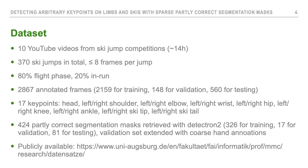We annotate 17 key points: the head, the shoulders, elbows, wrists, hips, knees, ankles, ski tips and tails. Furthermore, we retrieve 424 partly correct segmentation masks with the Detectron 2 framework, which we also split into train, validation, and test sets. As the validation set is really small, we extend it with some coarse hand annotations, resulting in 46 validation images. This dataset is publicly available at the link below.